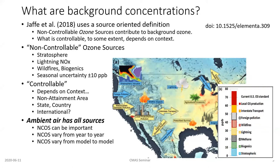The National Ambient Air Quality Standards look at the total concentration, and it doesn't matter much where individual pieces came from — unless it's controllable, in which case there are laws that allow us to recommend implementation of controls. Controllable again depends on context: that might be the non-attainment area, the state, the country, or even international. There are treaties with binding and non-binding agreements that allow countries to encourage controls on sources.